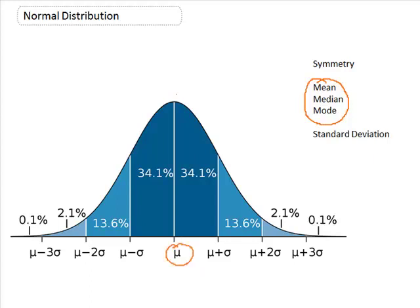In our chart here, we can already see that the mean has been labeled. That is the center point of our data, or the average. Our median — the midpoint of our data — is also at this same point. In a normal distribution, 50% of our data falls above and below the mean, which also means the mean and median are the same. The mode is the number that occurs most frequently, and here it is at the highest point on our curve. So the mean, median, and mode are all exactly the same number in a normal distribution.